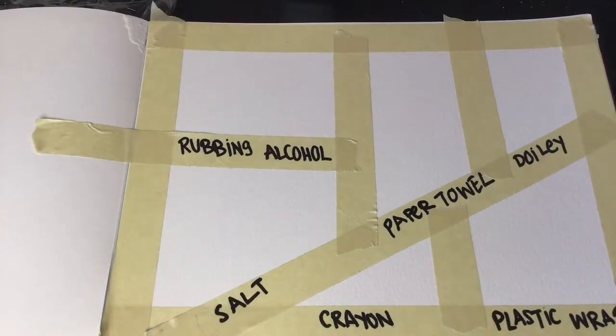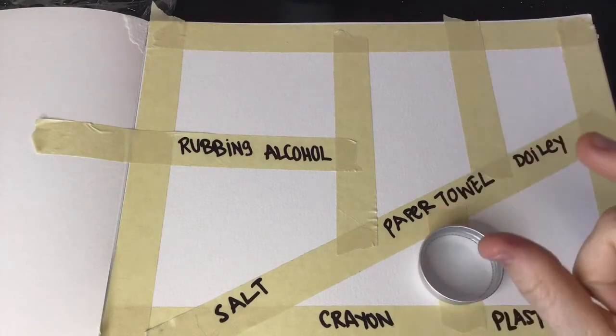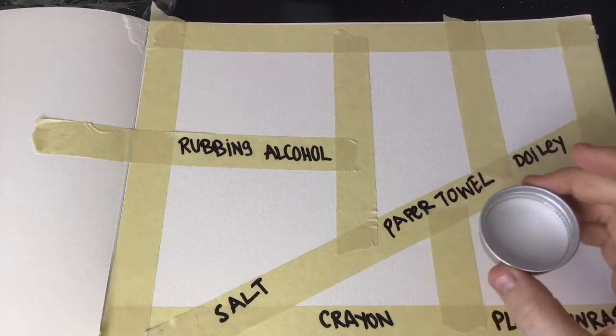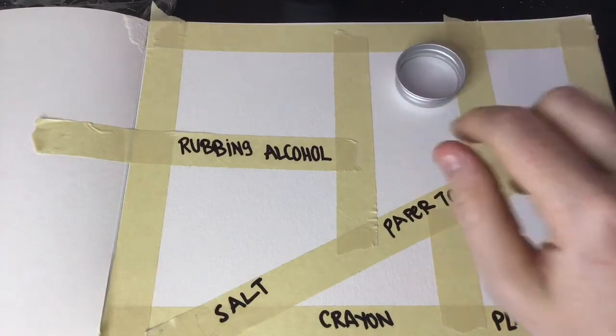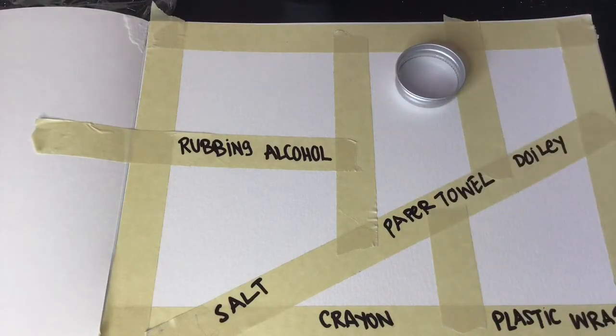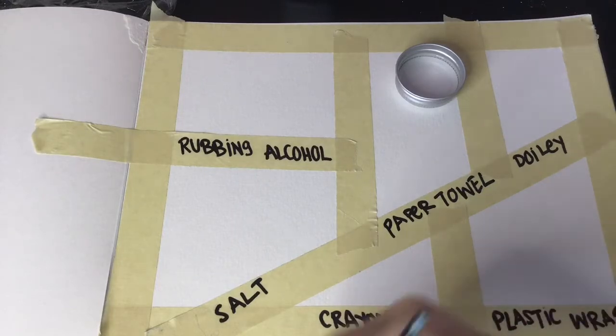For your rubbing alcohol, I have just a tiny bit of rubbing alcohol in here. Usually I have clear, tiny little painting cups in my classroom, but I'm at home, so I've used just a random little lid I found, and that is plenty of rubbing alcohol for my purposes here. And I also have my paint ready to go.